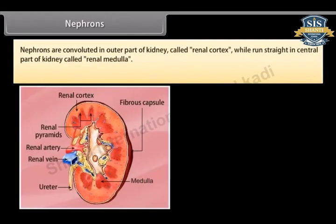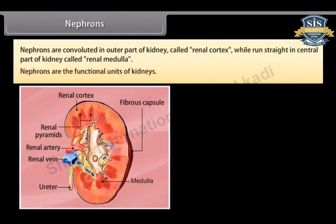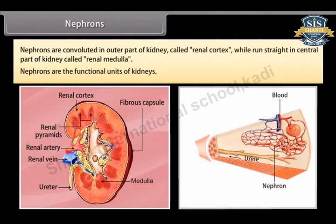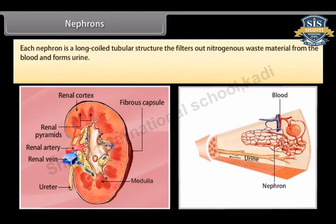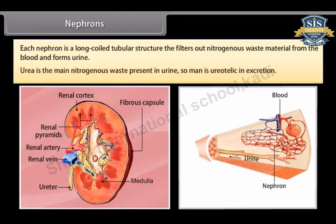Nephrons are convoluted in the outer part of the kidney called the renal cortex, while they run straight in the central part called the renal medulla. Nephrons are the functional units of kidneys. Each nephron is a long coiled tubular structure that filters out nitrogenous waste material from the blood and forms urine. Urea is the main nitrogenous waste present in urine, so man is ureotelic in excretion.